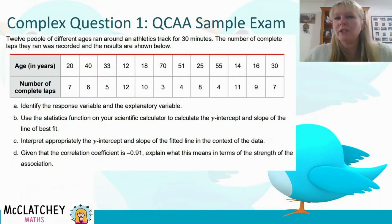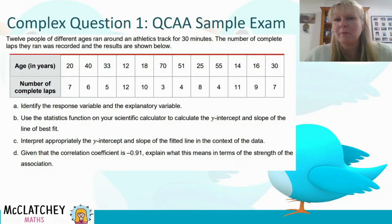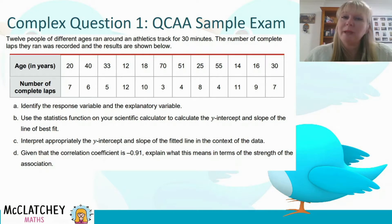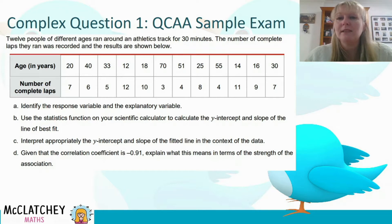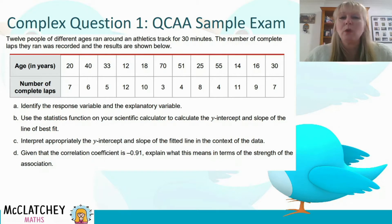In our question today, I've actually taken this from the QCAA sample exam on their website. It says 12 people of different ages ran around an athletics track for 30 minutes. The number of complete laps that they ran was recorded and the results are shown below.